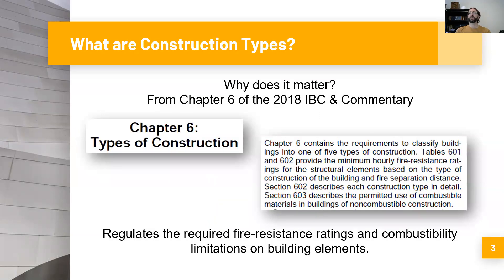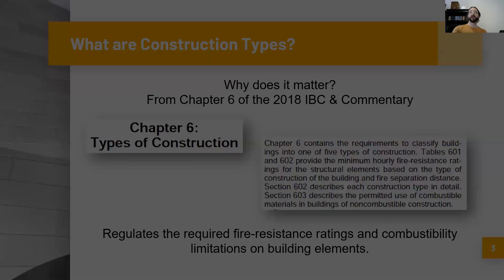So why does it matter? We'll take a look at what the 2018 IBC International Building Code and commentary states. Chapter six is called 'Types of Construction,' and it says: Chapter six contains the requirements to classify buildings into one of five types of construction. Table 601 and 602 provide the minimum hourly fire resistance ratings for structural elements based on the type of construction and fire separation distance. Section 602 describes each construction type in detail, and Section 603 describes the permitted use of combustible materials in buildings of non-combustible construction.